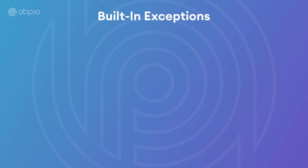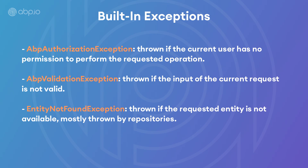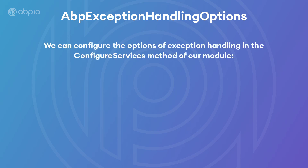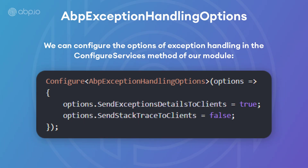There are also built-in exceptions: ABP authorization exception, ABP validation exception, and entity not found exception. Before we move into the code part, we can configure the options of exception handling in the ConfigureServices method of our module. It has two booleans: SendExceptionDetailsToClients and SendStackTraceToClients.